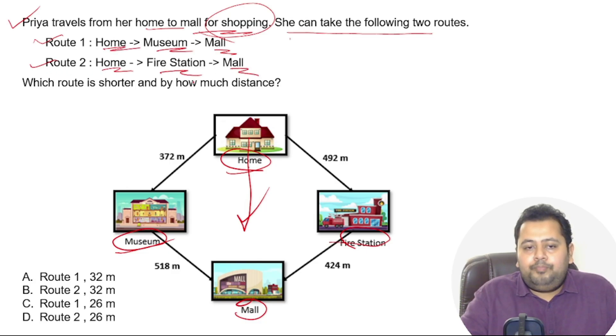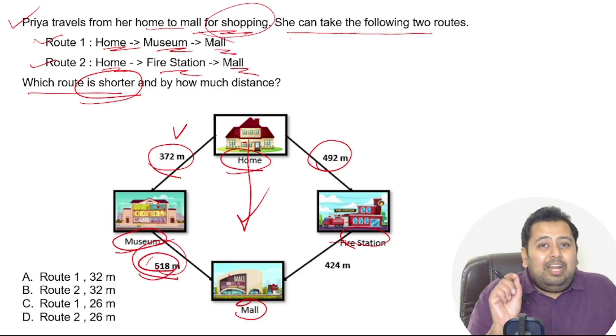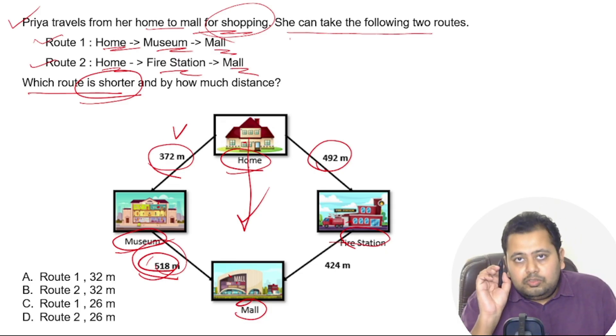Which route is shorter? You can see they have given the distances here. The distance between home and museum is 372 meters. The distance between museum and mall is 518 meters. Similarly, you can find the distances from home to fire station and from fire station to mall.